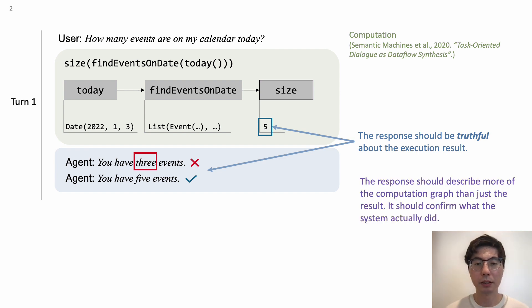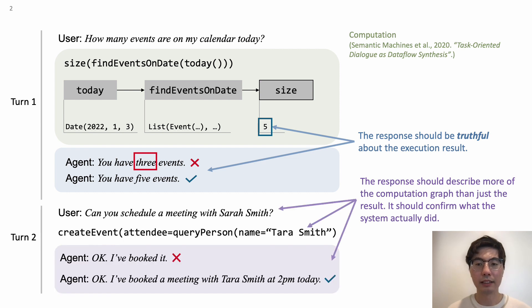Second, the responses should describe more of the computation graph than just the result. It should confirm what the system actually did. As shown in this second turn, the system misrecognizes Sarah Smith as Tara Smith. If the agent uses the first response, it is difficult for the user to notice the error.